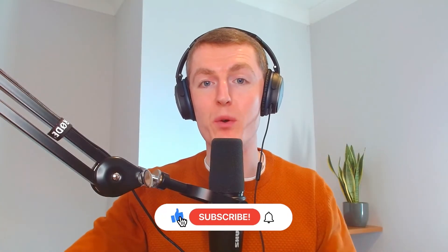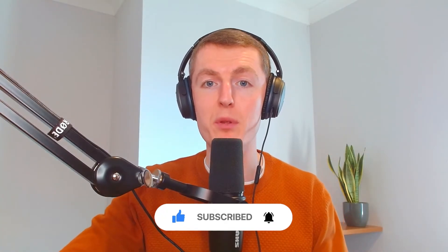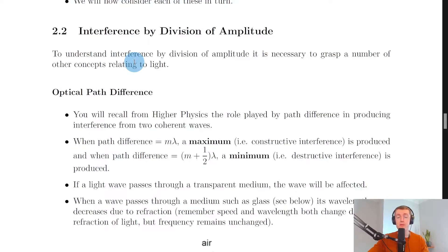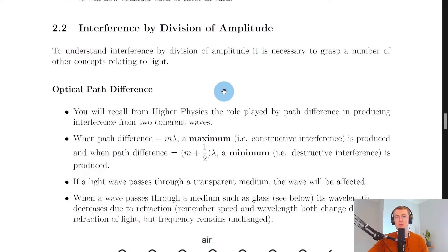Hey folks, welcome back. In this video we're going to look at interference by division of amplitude. Our first main type of interference in advanced higher physics is called interference by division of amplitude. To understand it, we need to grasp concepts relating to light, including optical path difference, phase changes on reflection, and phase difference in optical path difference. These concepts will help with applications like thin films, looming of lenses, and thin wedge interference.